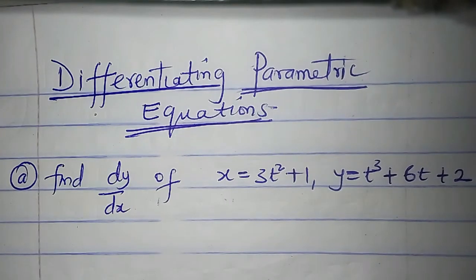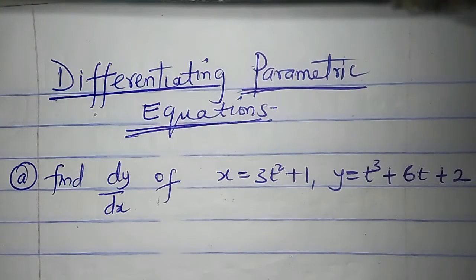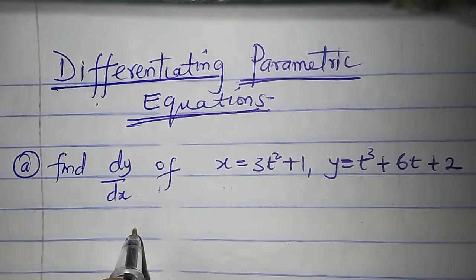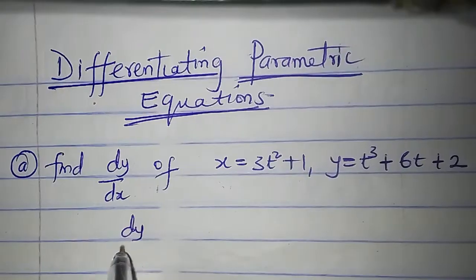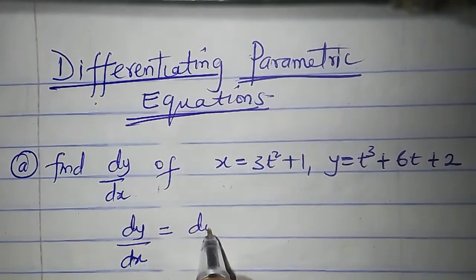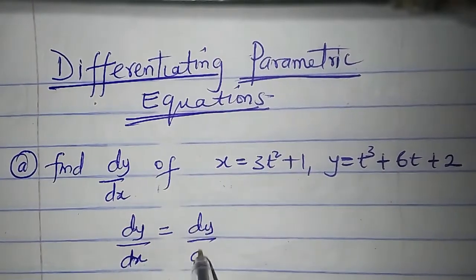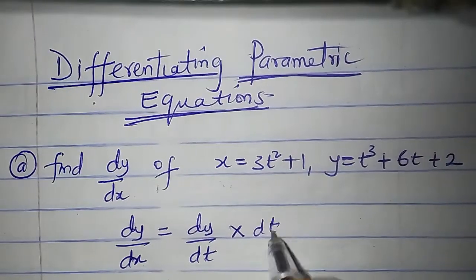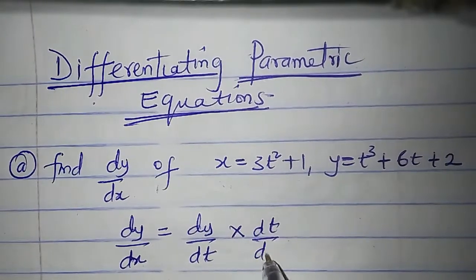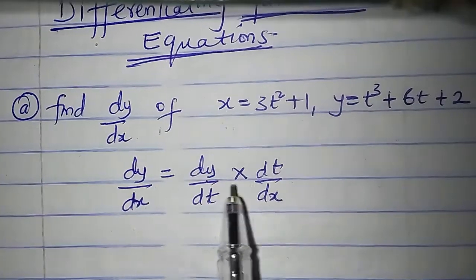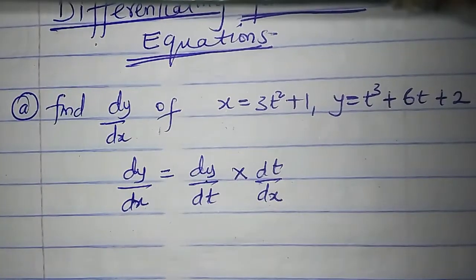To differentiate parametric equations, we make use of the chain rule. dy/dx is equal to dy/dt times dt/dx. So let's go ahead and look for dy/dt and dt/dx.